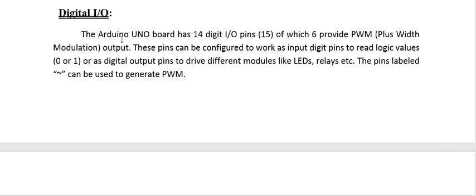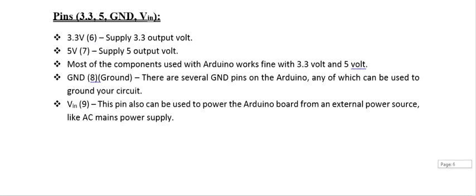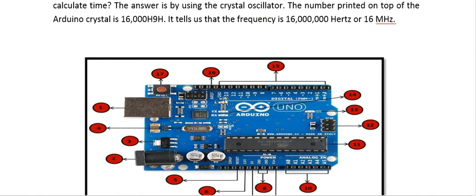Digital Input and Output: the Arduino Uno board has 14 input/output pins (pin 0 to 13), of which six provide PWM (Pulse Width Modulation) output — specifically pins 3, 5, 6, 9, 10, and 11. These pins can be configured as digital input to read logic values 0 or 1, or as digital output to drive modules like LEDs or relays.